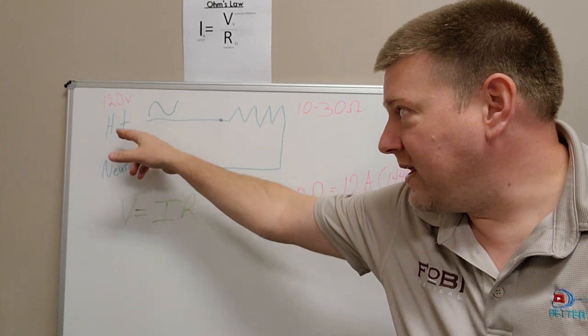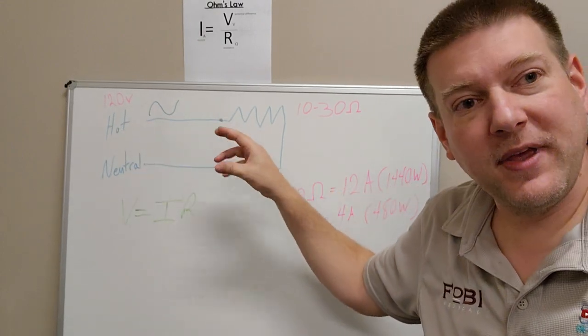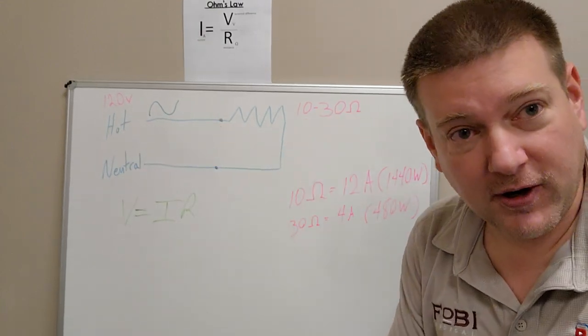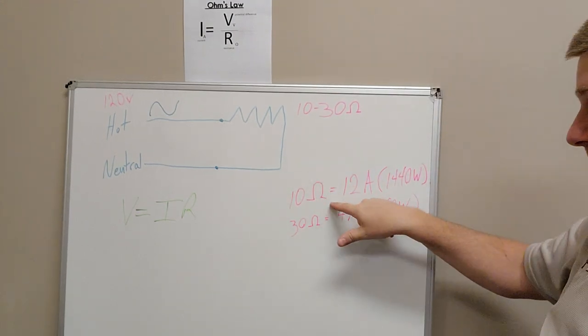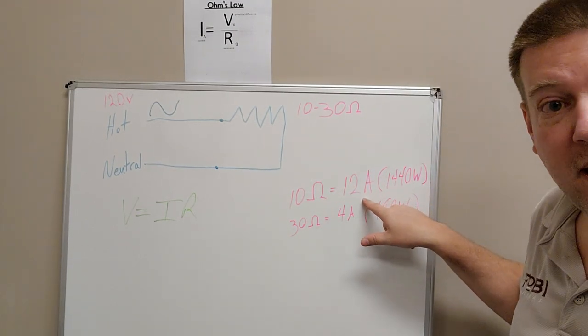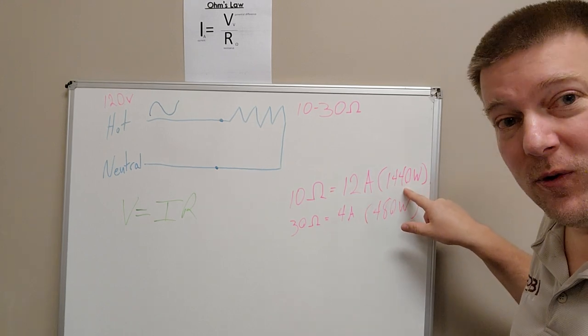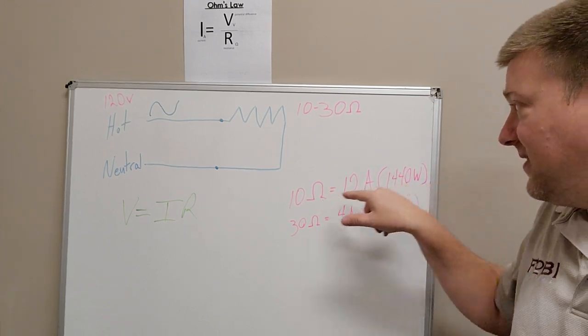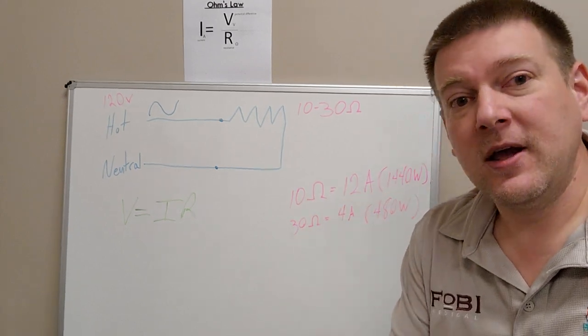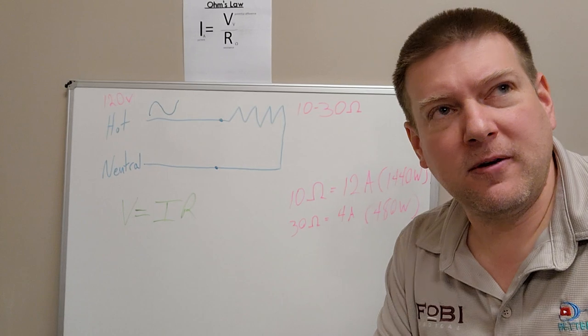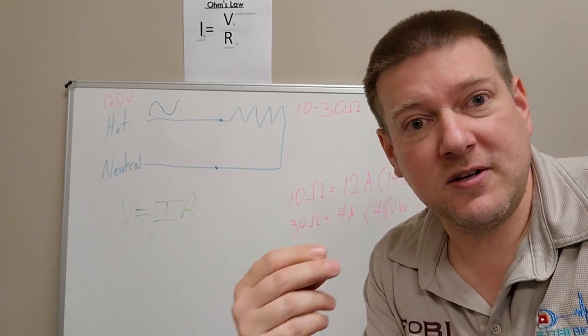When a heating element is turned on, it runs at full current, which means at 10 ohms you're getting 12 amps, which is 1440 watts. That is pretty much the max that you can get on 120 volts. This would be like a heating element for a water heater or something like that.